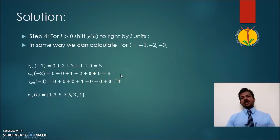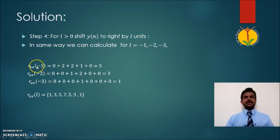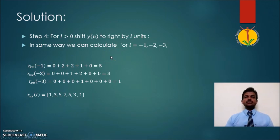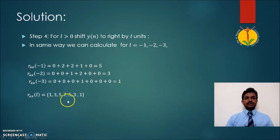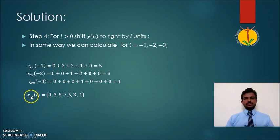Now let us see what happens when we apply negative values of L, that is L = −1, −2, −3. In such a case, the signal will shift to the left side, and after shifting, we again multiply the signal with the original one. After the multiplication and addition procedure we obtain these different values. Summarizing, this gives the autocorrelation of the signal x with itself.